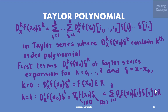We can write the following expression: the kth derivative of f at x₀ contracted with δᵏ equals Σ(i₁=1 to d) … Σ(iₖ=1 to d) [f⁽ᵏ⁾(x₀)]_{i₁…iₖ} δᵢ₁ … δᵢₖ. In the Taylor series, this term contains the kth order polynomials.